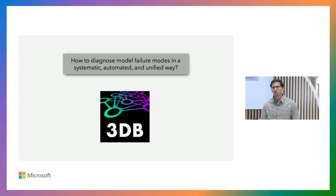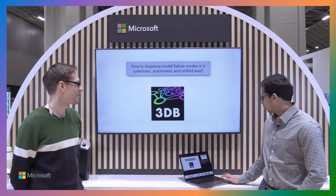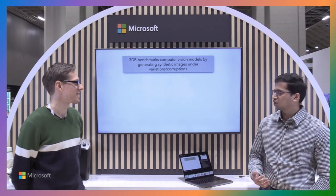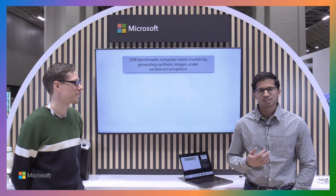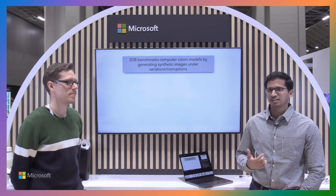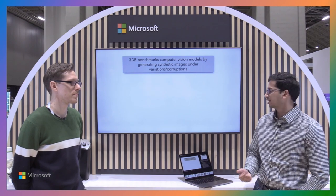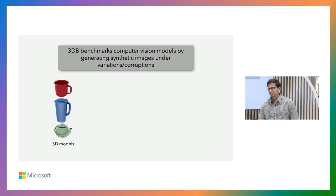To that end, we present what we call 3DB, which is a framework—it's kind of like a play on words, 3D debugger, like GDB. At its core, 3DB is a framework for diagnosing computer vision models by generating synthetic imagery that contains many different kinds of corner cases that you would want to test against. It basically generates synthetic images under different kinds of corruptions, transformations, and other perturbations.